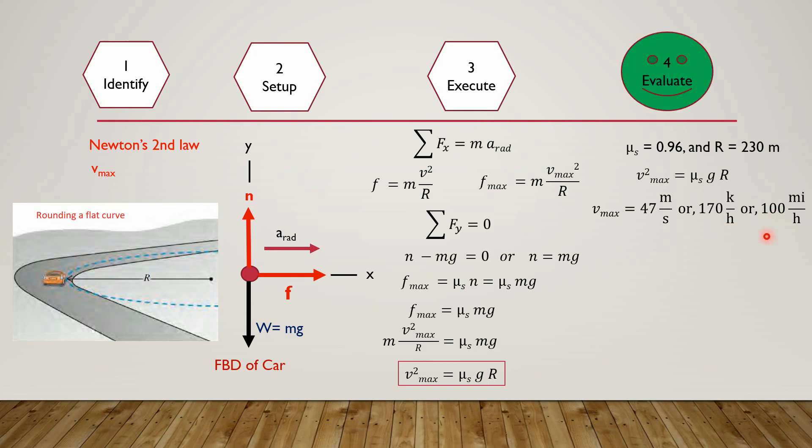Next step is to evaluate. Maximum speed depends upon the value of mu s and R. If the road is wet or icy, then the value of mu s will be changed. In this case, maximum speed will be reduced. Maximum speed at which a car can safely take a turn will not be equal to 47 meters per second.